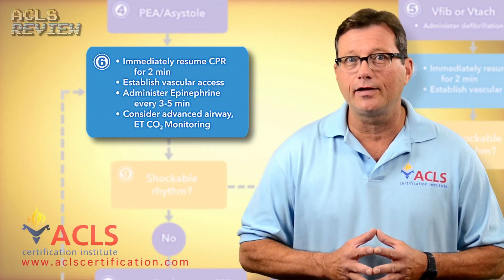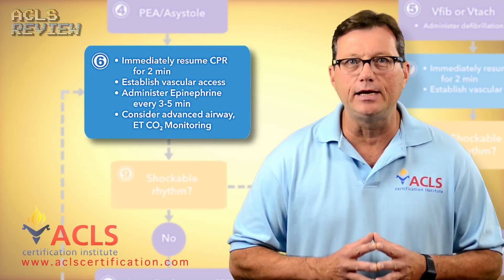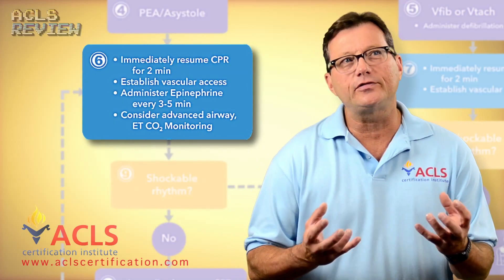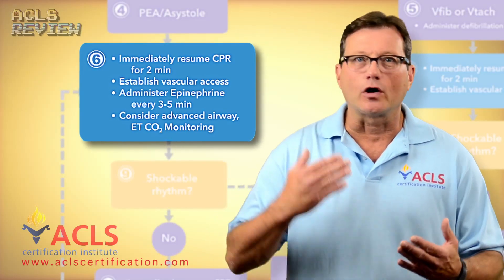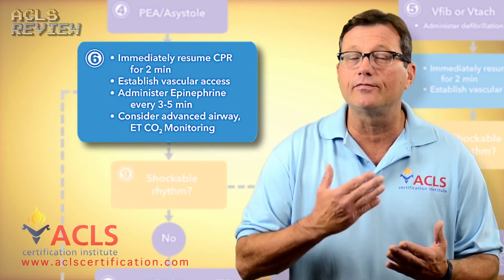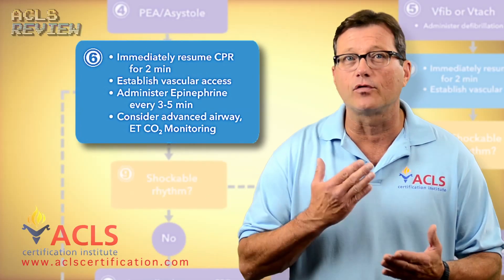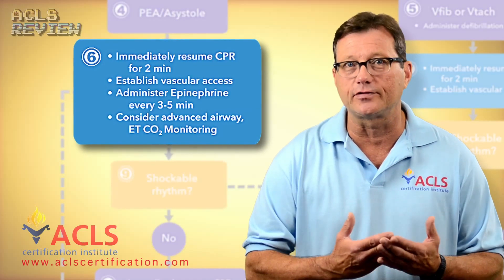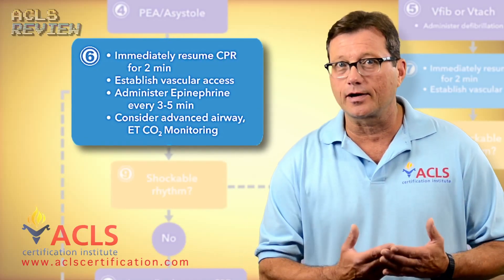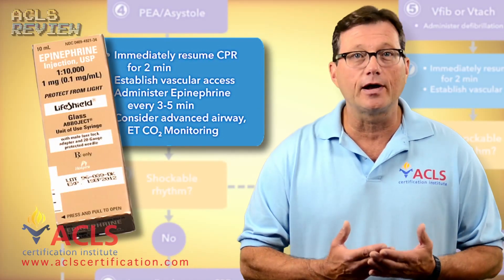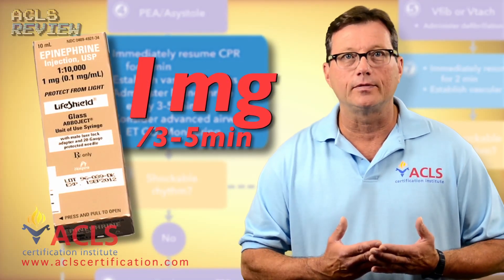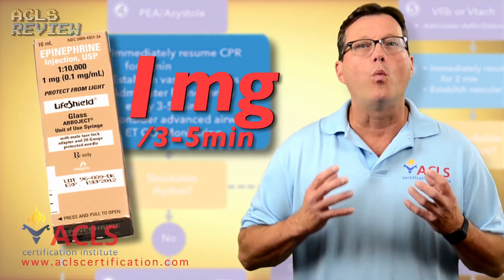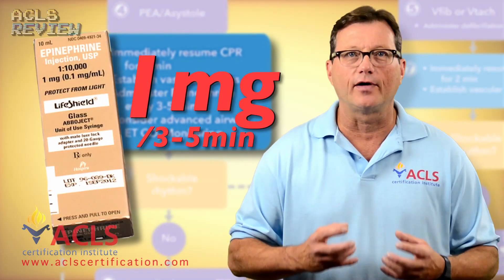According to the AHA guidelines we're going to start chest compressions immediately. And should this asystole occur in a younger person, start chest compressions immediately — we need to find a cause. We need to be looking for why did this patient become asystolic. The guidelines recommend epinephrine be administered: one milligram every three to five minutes. Reassess the patient while you're trying to find a cause.